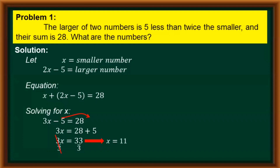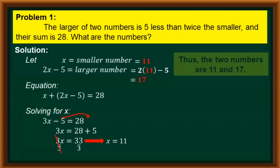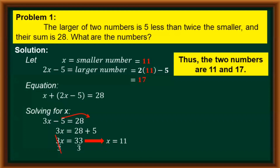Going back to our problem, we let x be equal to our smaller number. So the smaller number is 11. For the larger number, which is 2x minus 5, we multiply 2 by 11 then subtract 5, which gives us 17. Thus, the two numbers are 11 and 17.